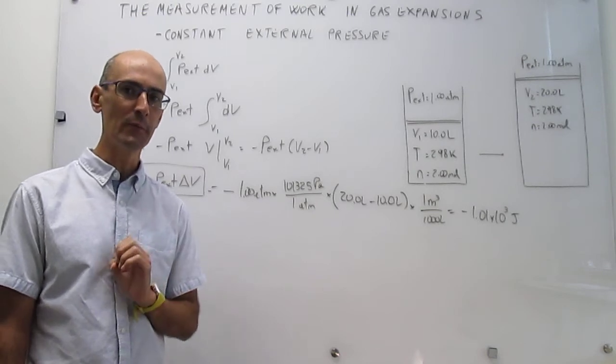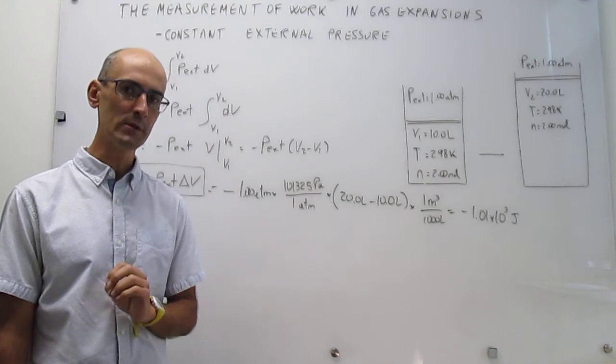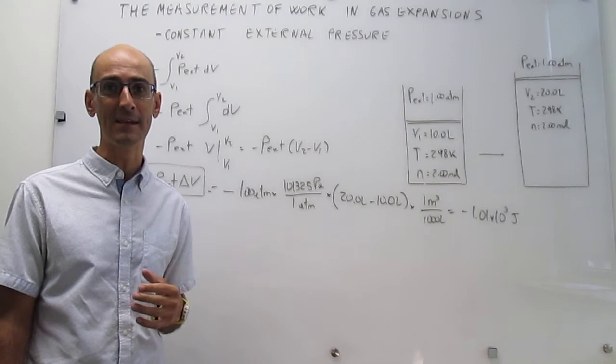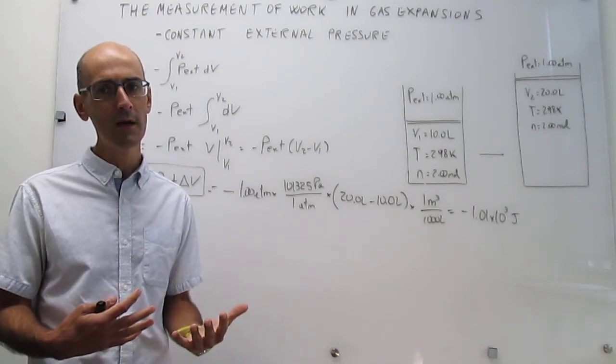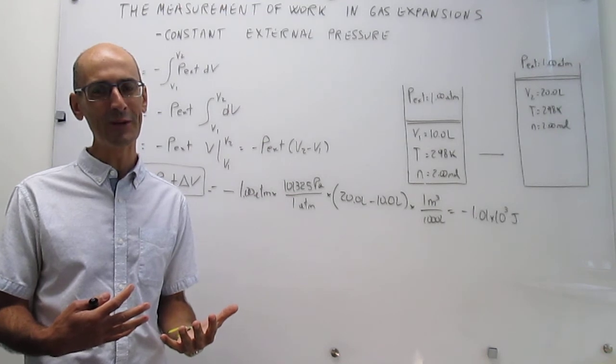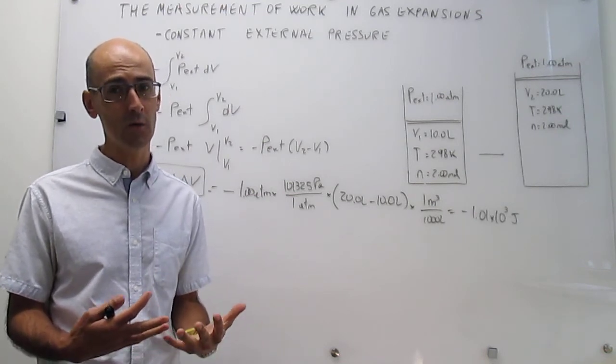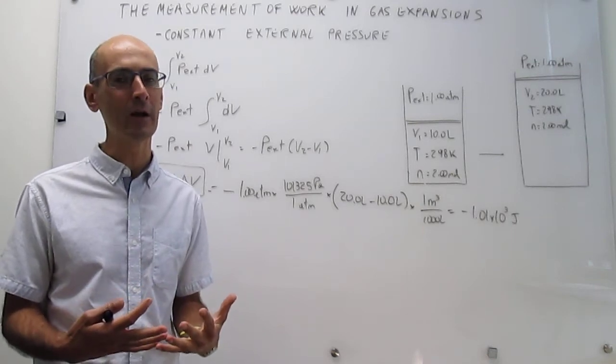And that illustrates a very important point, and that is, in order to do work, you have to oppose a force. If there's no force, as is the case against a perfect vacuum, then no work can be done. So that is how this idea of working in a perfect vacuum sets the lower limit for work. If you are working against no force, then you're doing no work.